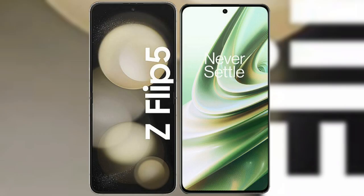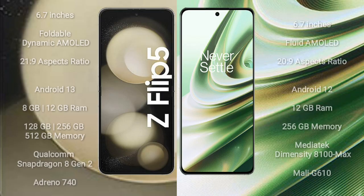I will compare the new Samsung Galaxy Z Flip 5 with OnePlus 10R. Samsung Galaxy Z Flip 5 comes with a 6.7-inch foldable dynamic AMOLED display and aspect ratio 21:9. OnePlus 10R comes with a 6.7-inch flat AMOLED display and aspect ratio 20:9.